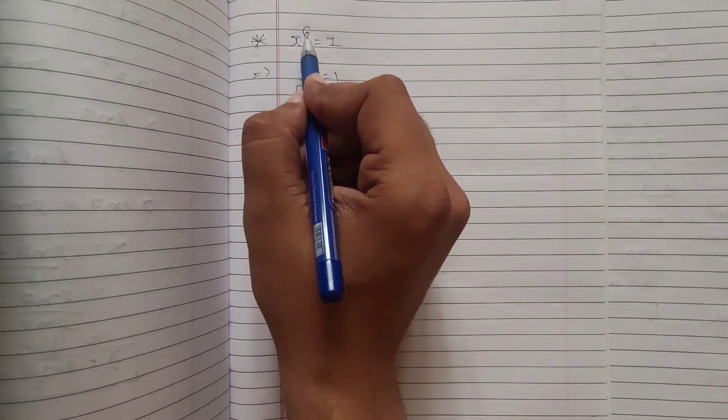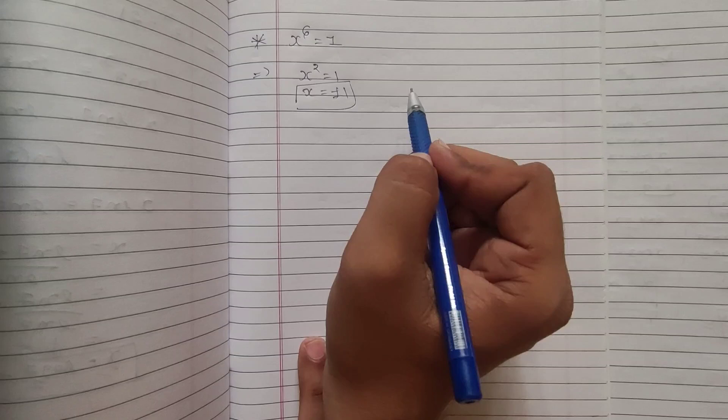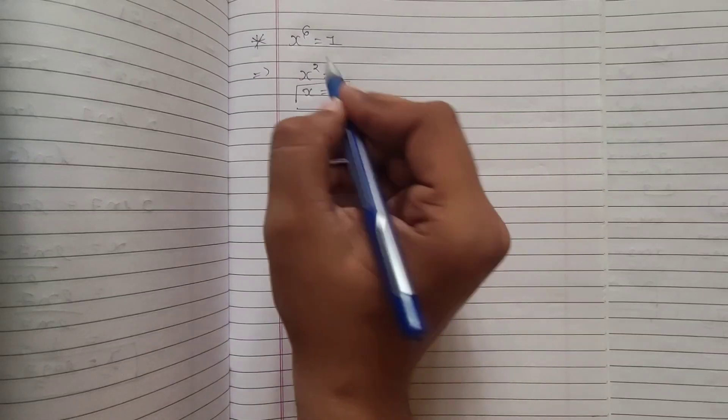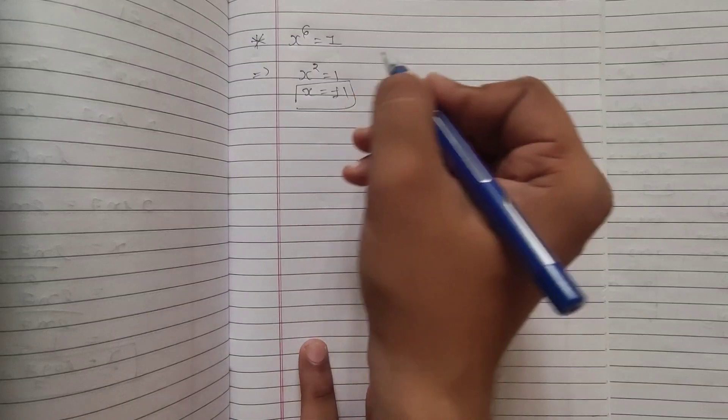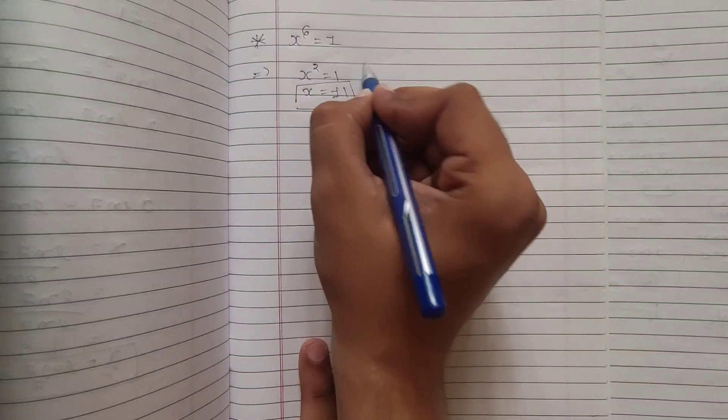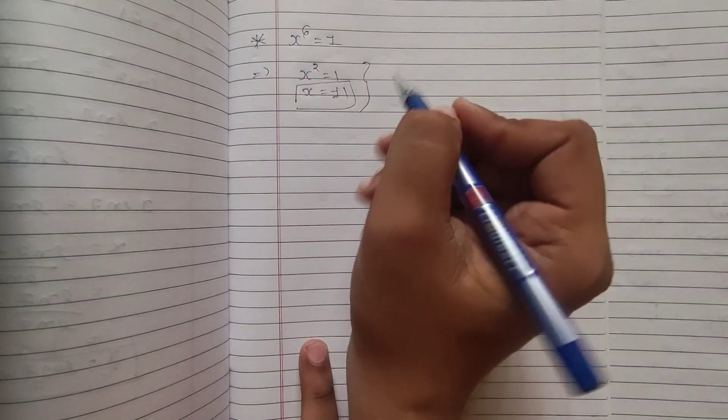which means I will get 6 different values of x in this particular question. So, out of this 6, 2 values will be plus or minus 1. So, we have to find other 4 values, right. So, now let us see how we will find that 4 values.